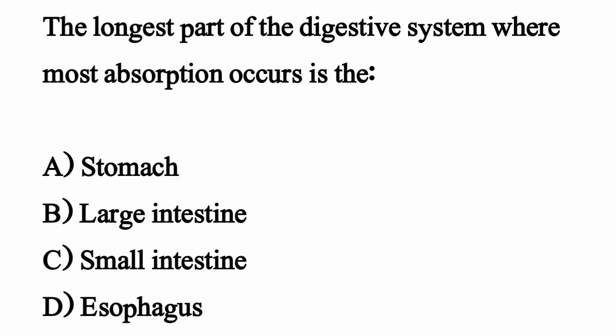The longest part of the digestive system where most absorption occurs is — option D. The correct option is option C: Small intestine.